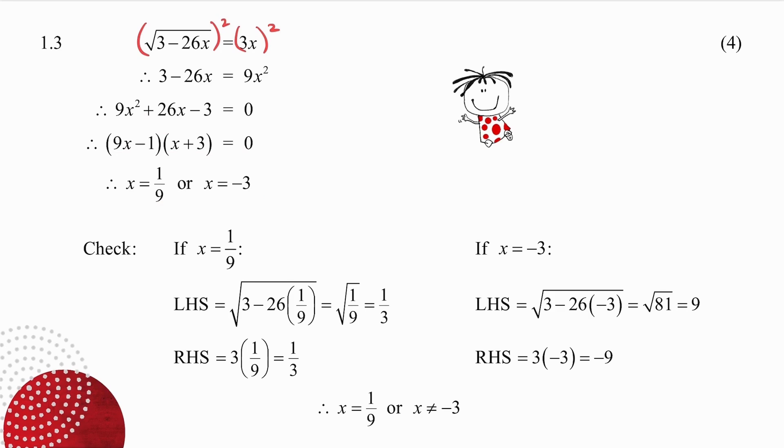And then remember, if you have a surd equation, you have to check your answers back. So if x is 1 over 9, I substitute into the left-hand side, and I get an answer of 1 third. 3 times 1 over 9 on the right-hand side, I also get an answer of 1 third. Because the left and the right-hand sides are the same, it means that x is 1 over 9 is a solution.